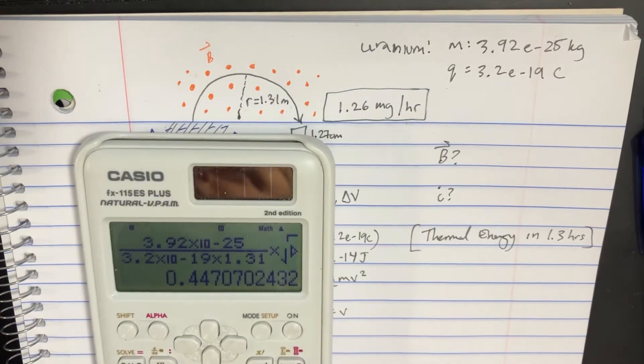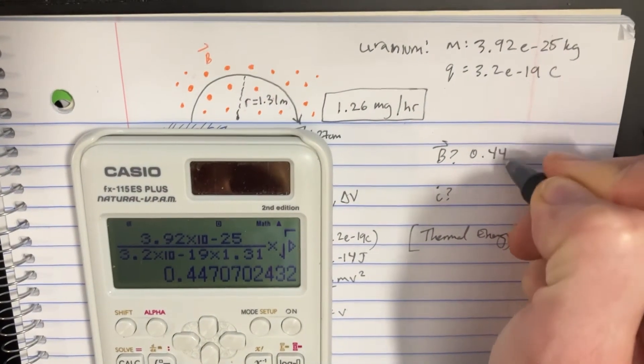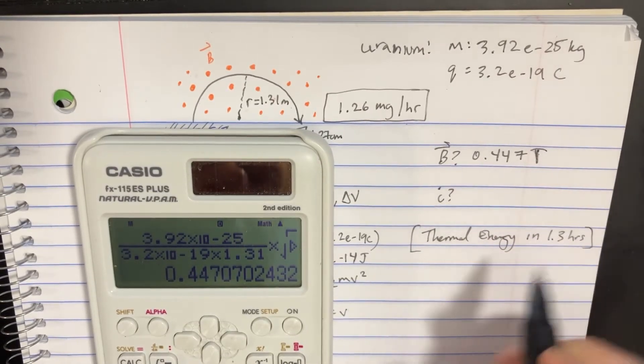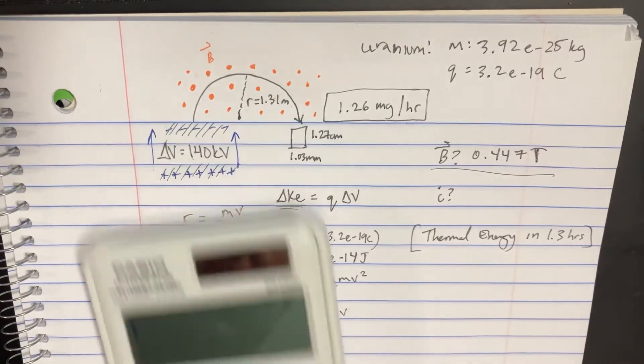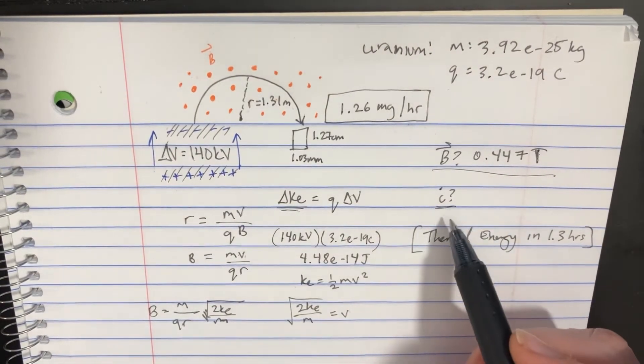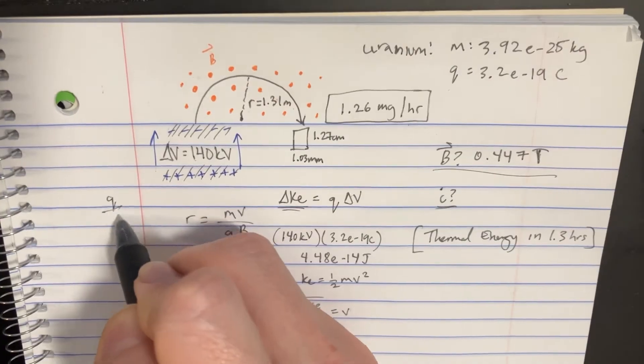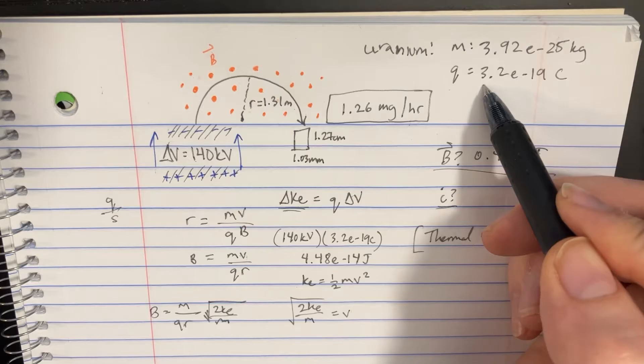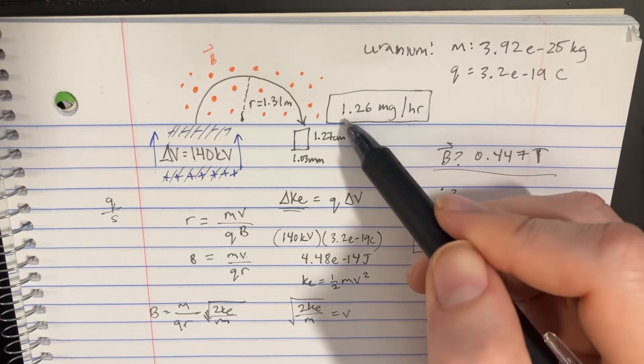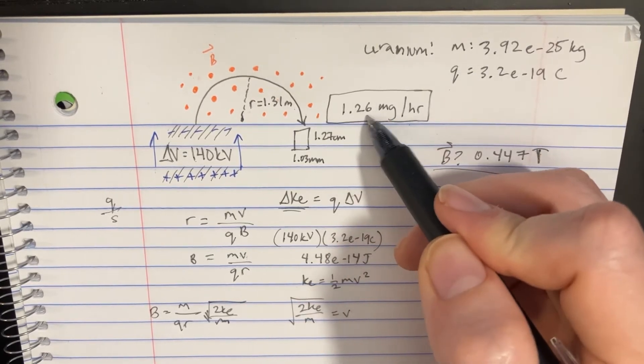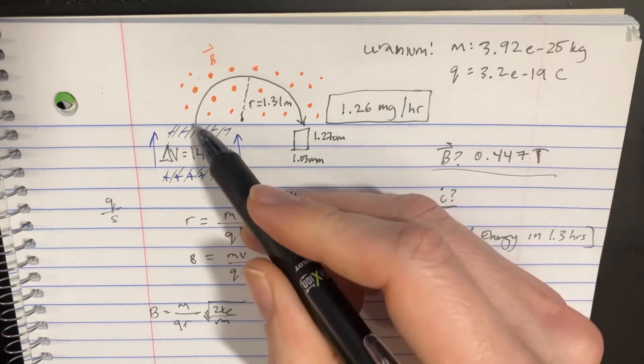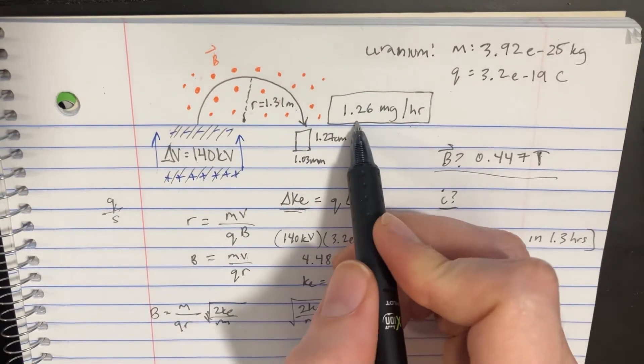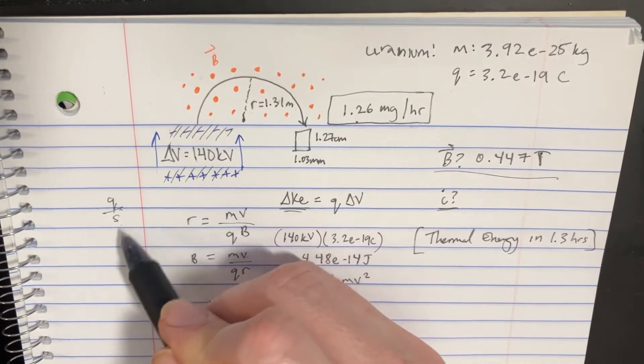That should give us 0.447 tesla for the magnetic field. Now we can take a look at the current. The current is supposed to be q over t so we've got 1.26 milligrams per hour that this is pumping through. Let's try to convert this into q over t.